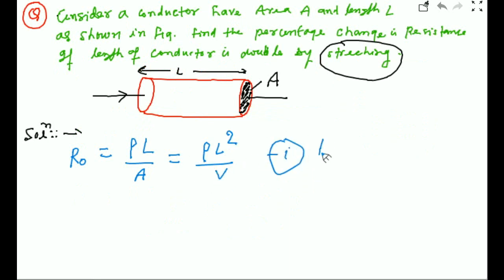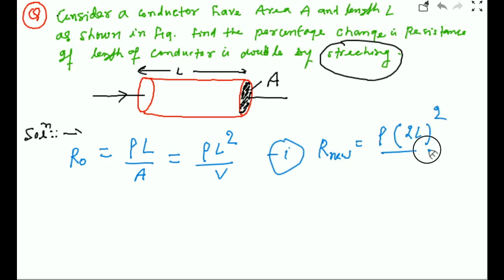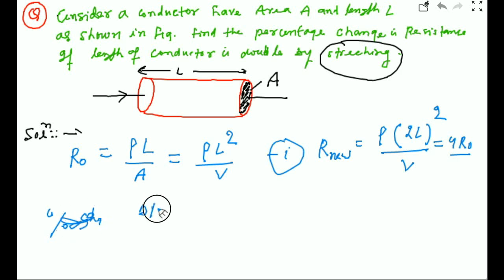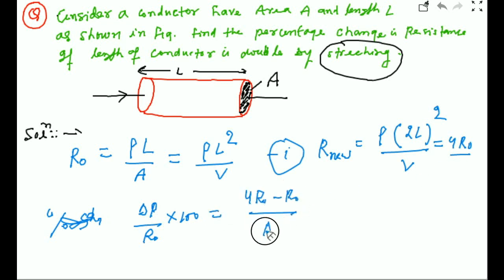So write R-naught equals rho l-squared by volume. For R-new, the length is 2l, so R-new equals rho times (2l)-squared by volume, which equals 4 rho l-squared by V, so R-new equals 4 R-naught. The percentage change in R equals delta-R by R-naught times 100, which equals (4 R-naught minus R-naught) by R-naught times 100, giving 300 percent.